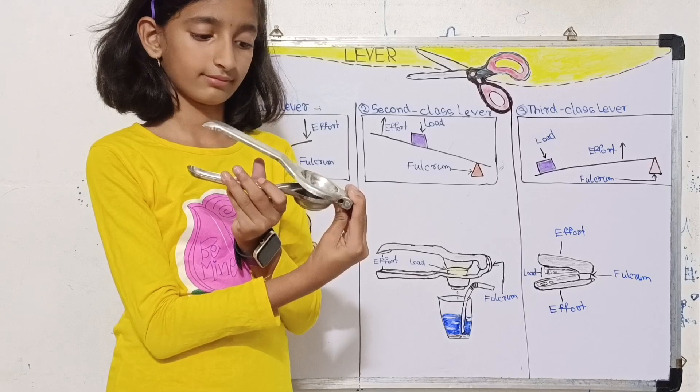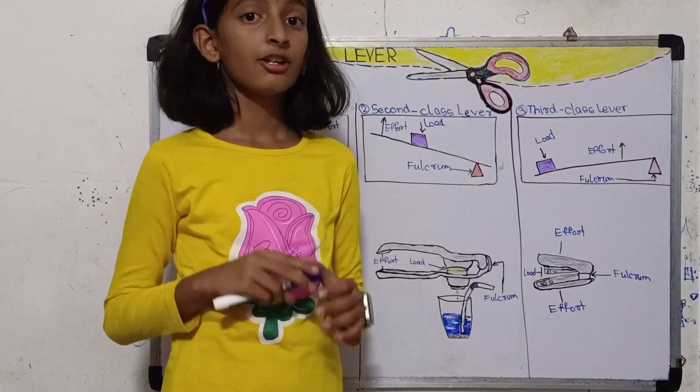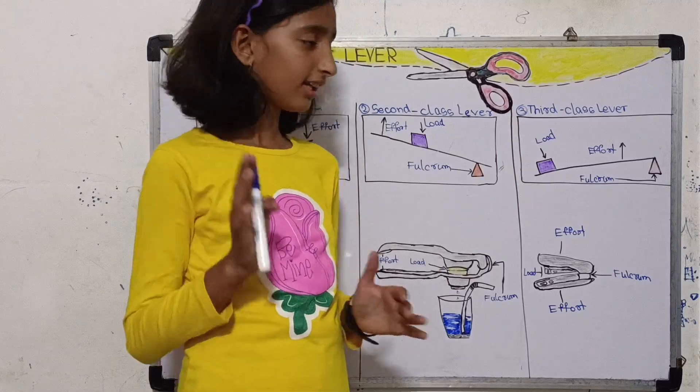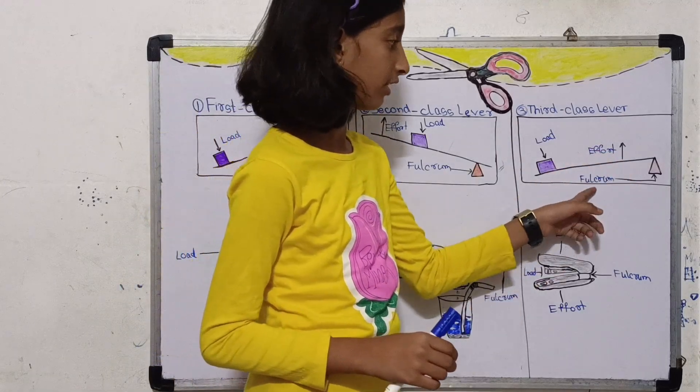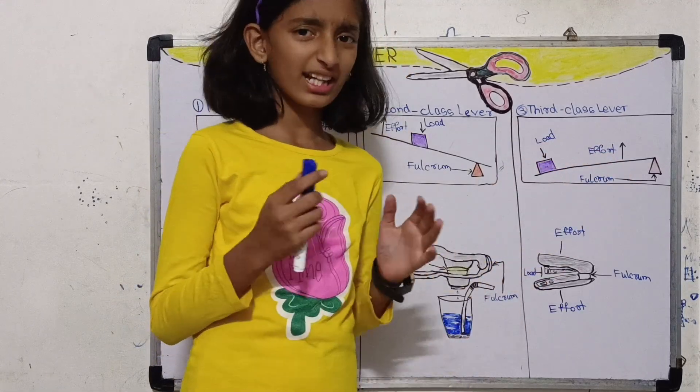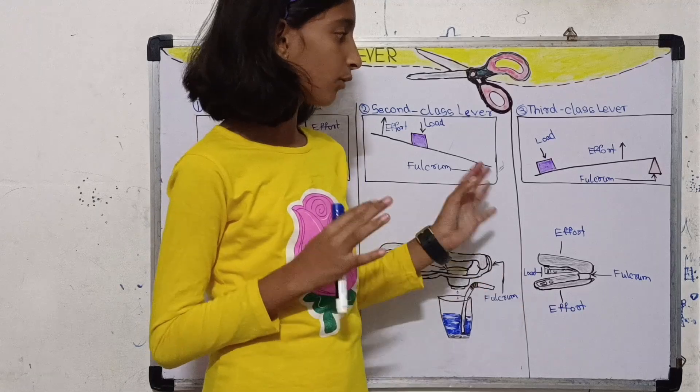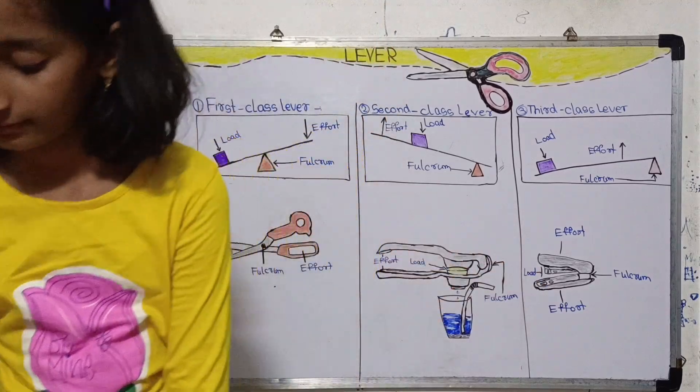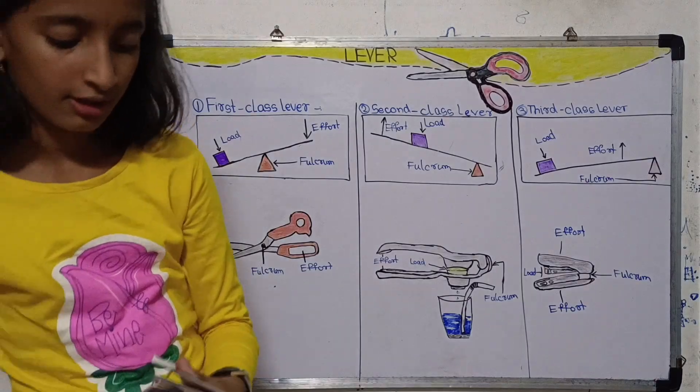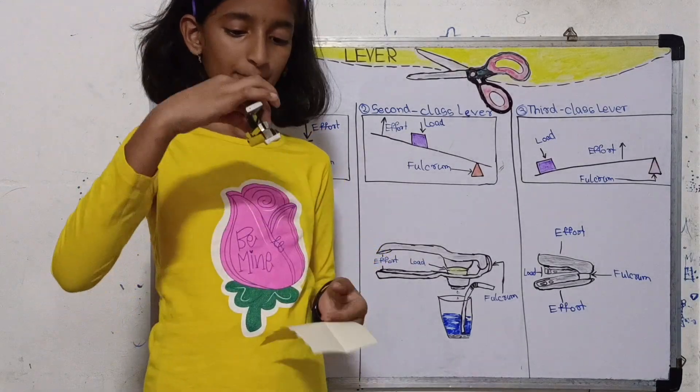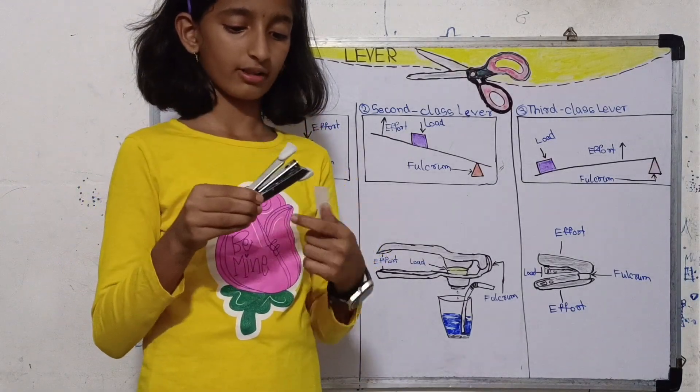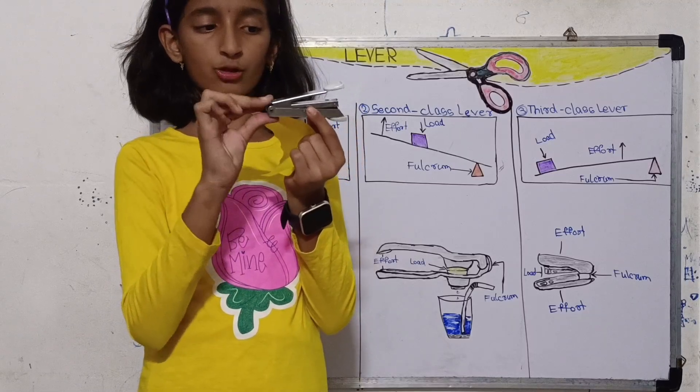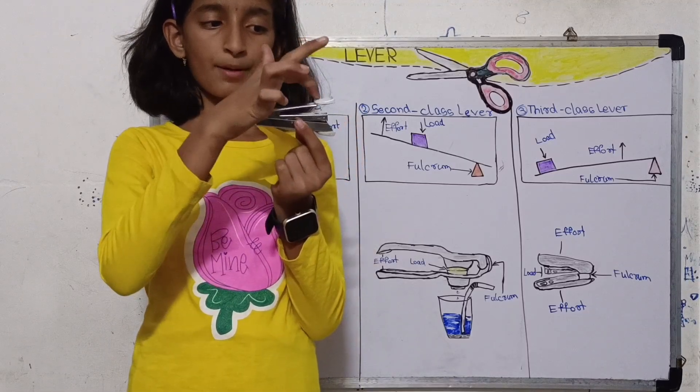Now let's have information about third class lever. In this, effort is between the fulcrum and load. Let's see with an example - stapler. You can see this is a stapler and the fulcrum point is here, keeping joined the middle part, upper part, and lower part.